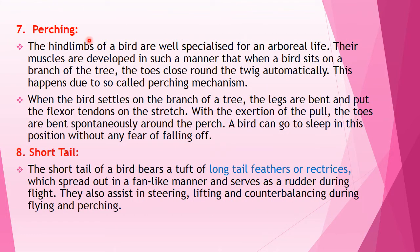The seventh morphological adaptation is perching. The hind limbs of birds are well specialized for an arboreal life. Their muscles are developed such that when a bird sits on a branch of a tree, the toes close around the twig automatically. This happens due to the perching mechanism: when the bird settles on a branch, the legs are bent and the flexor tendons are put on stretch. With the exertion of pull, the toes bend spontaneously around the perch so that a bird can sleep in this position without any fear of falling off.